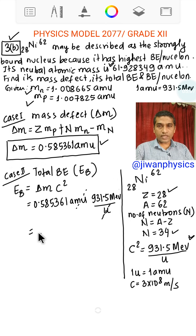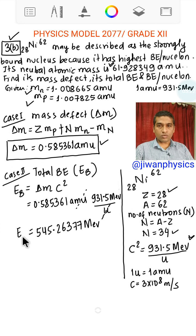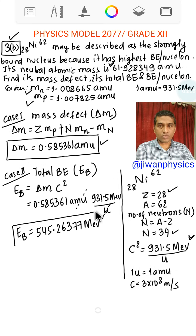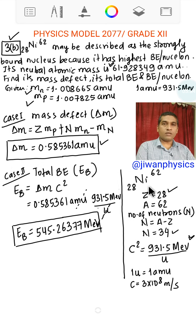And after simplification, we get total binding energy 545.26377 MeV, mega electron volt. This is the total binding energy. So I am putting this in a box.